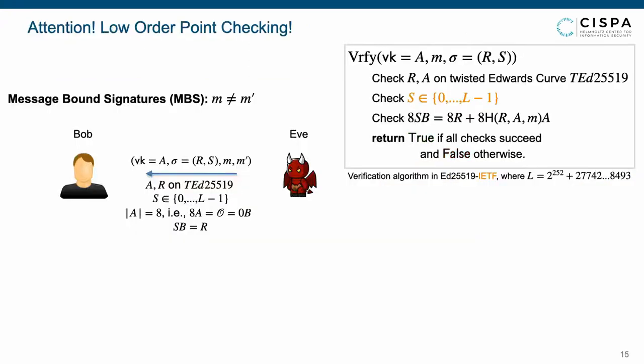The analysis for message bound signatures is, however, not the case. An adversary can output verification key A, signature R, S, and two messages M and M', such that the points A and R both are on TED25519, and the positive S is less than L. Then, pass the first and second checks. Additionally, the point A also has low order 8, which means 8 times A equals the point at infinity O, and further equals 0 times B, and that SB equals R. Then, the third check also succeeds. Therefore, the adversary can win for arbitrary distinct messages M and M', which indicates that the IETF version does not have MBS.